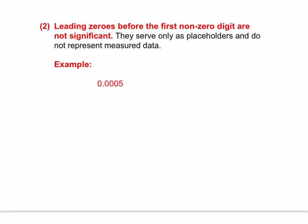Rule number two: any zero to start off a measurement called leading zeros are not significant. These numbers are simply placeholders to express the magnitude of a number. So in this example that you see below, you have a zero decimal spot, zero, zero, zero, five.